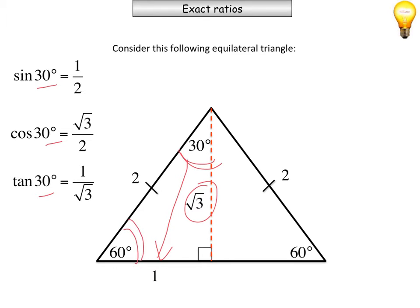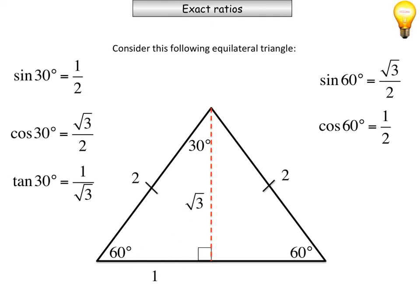We can also look at this angle down the bottom to work out sin of 60, cos of 60 and tan of 60. So I'll get you to pause the video and write down the 3 ratios for sin, cos and tan for 60 degrees. Okay, if you did the sin of 60, you should get opposite over hypotenuse, root 3 over 2. Cos of 60, which is adjacent over hypotenuse in relation to that angle. So you end up getting a half.